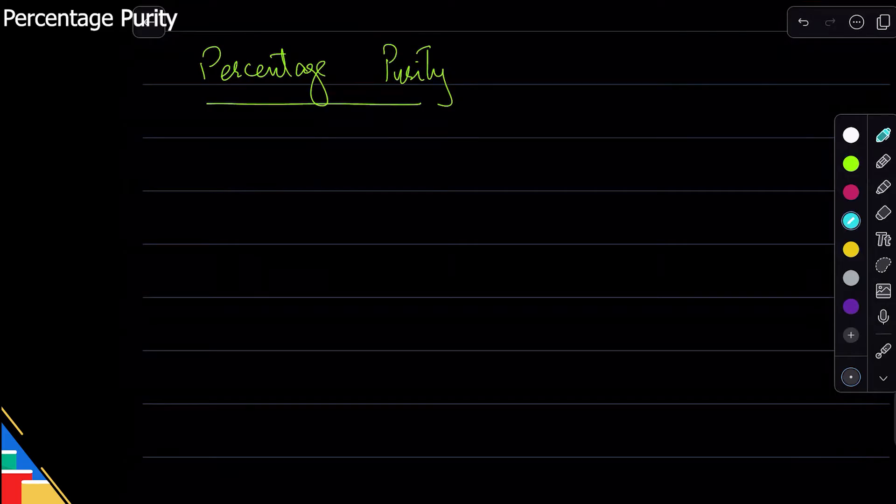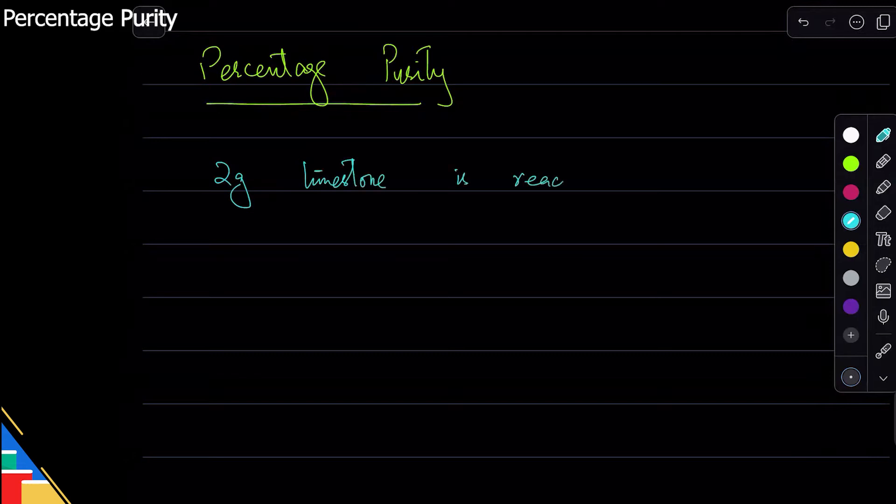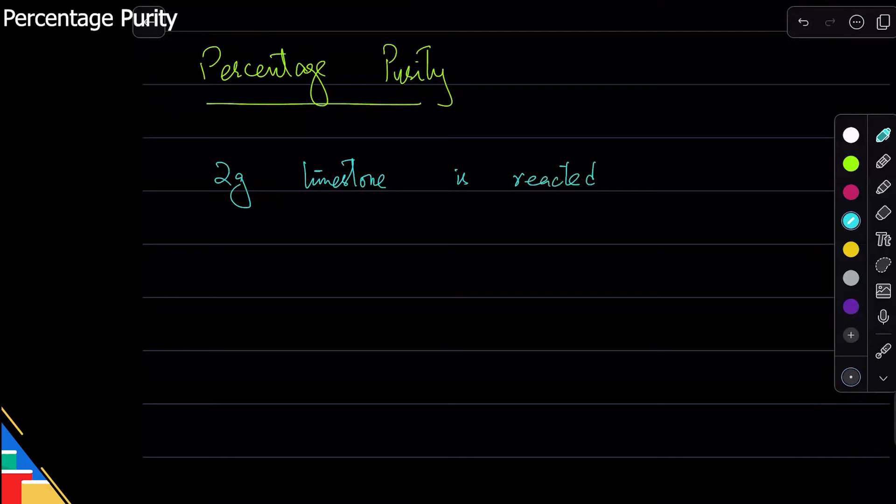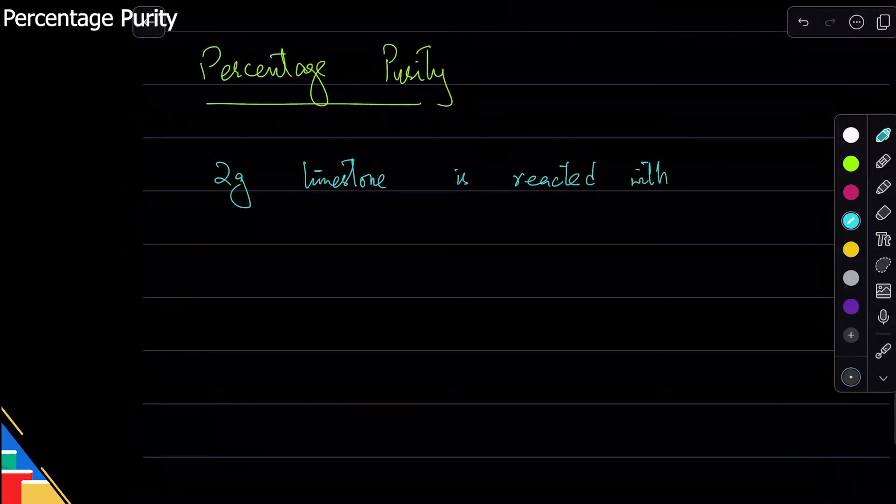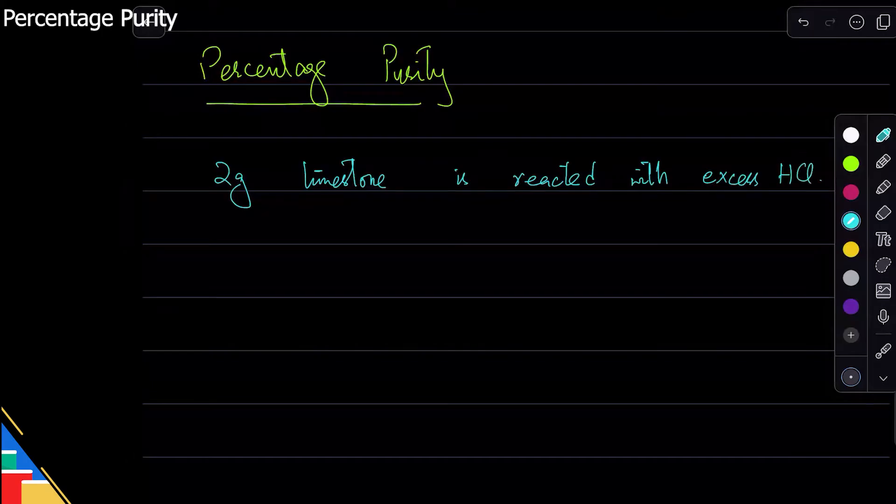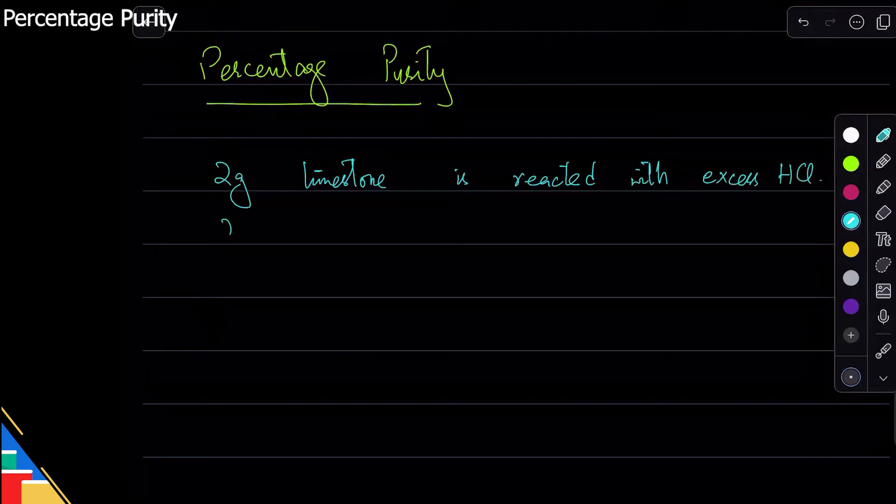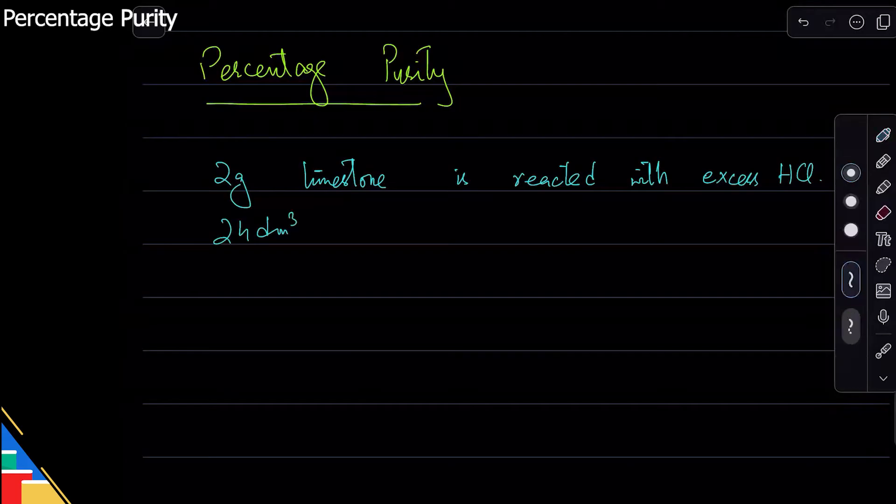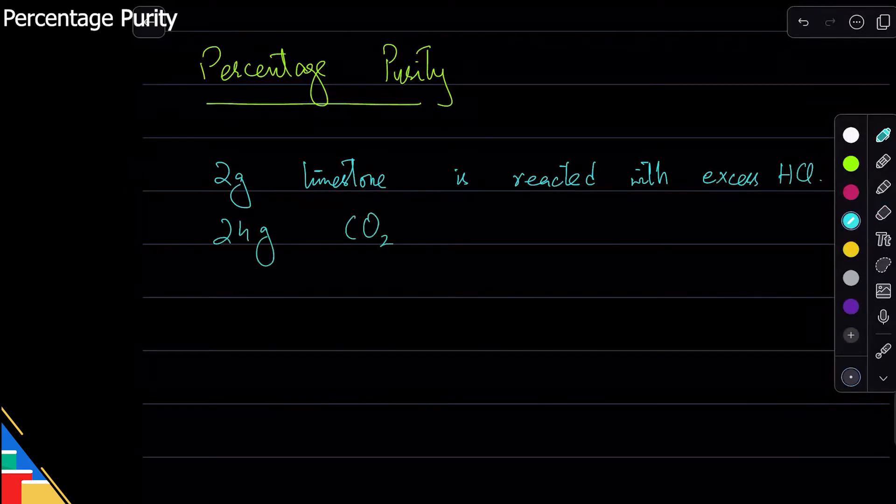So a very common example of this is that two grams limestone is reacted with excess HCl. 24 grams, in fact 24 grams CO2 is produced.